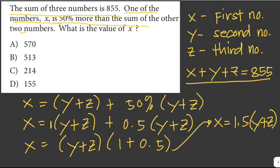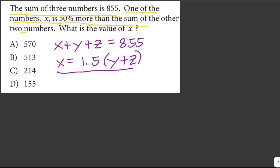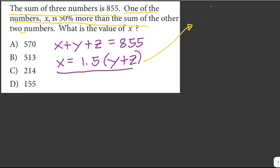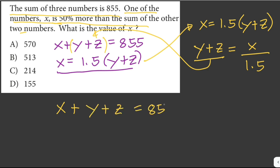So now we have two equations and we can solve for the value of x. We can write the second equation in terms of y plus z, so y plus z is just equal to x over 1.5. Now we can substitute the value of y plus z into the first equation. So x plus y plus z equals 855, and y plus z equals x over 1.5, giving us x plus x over 1.5 equals 855.